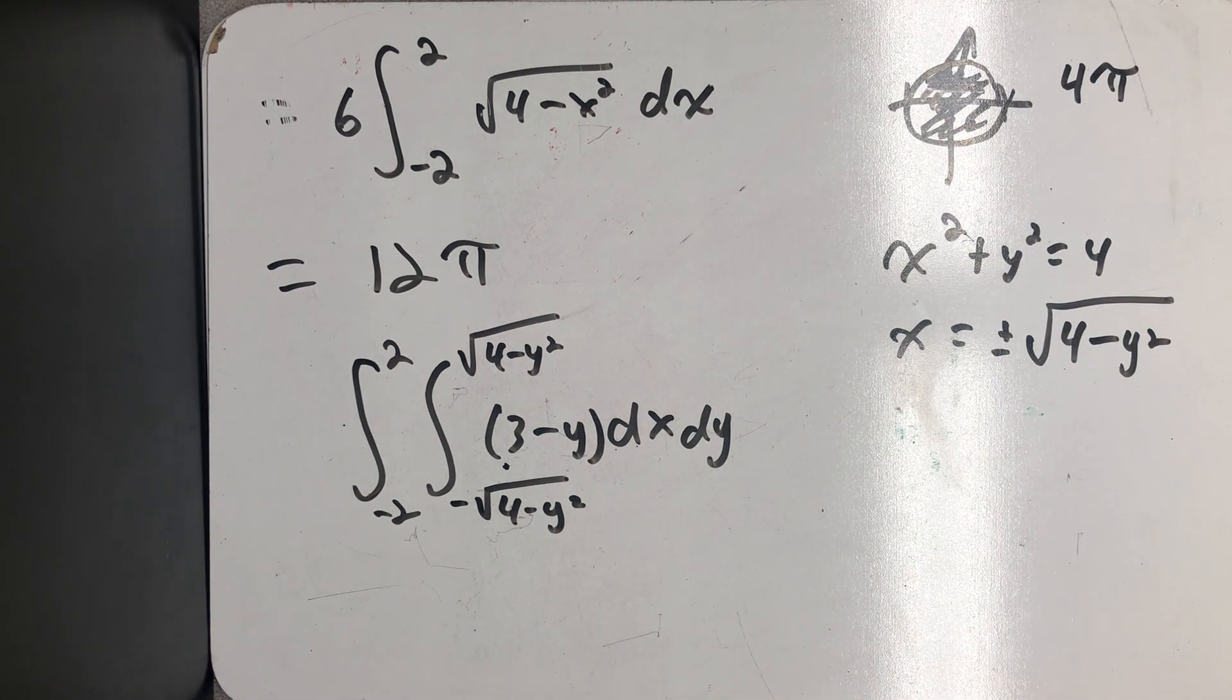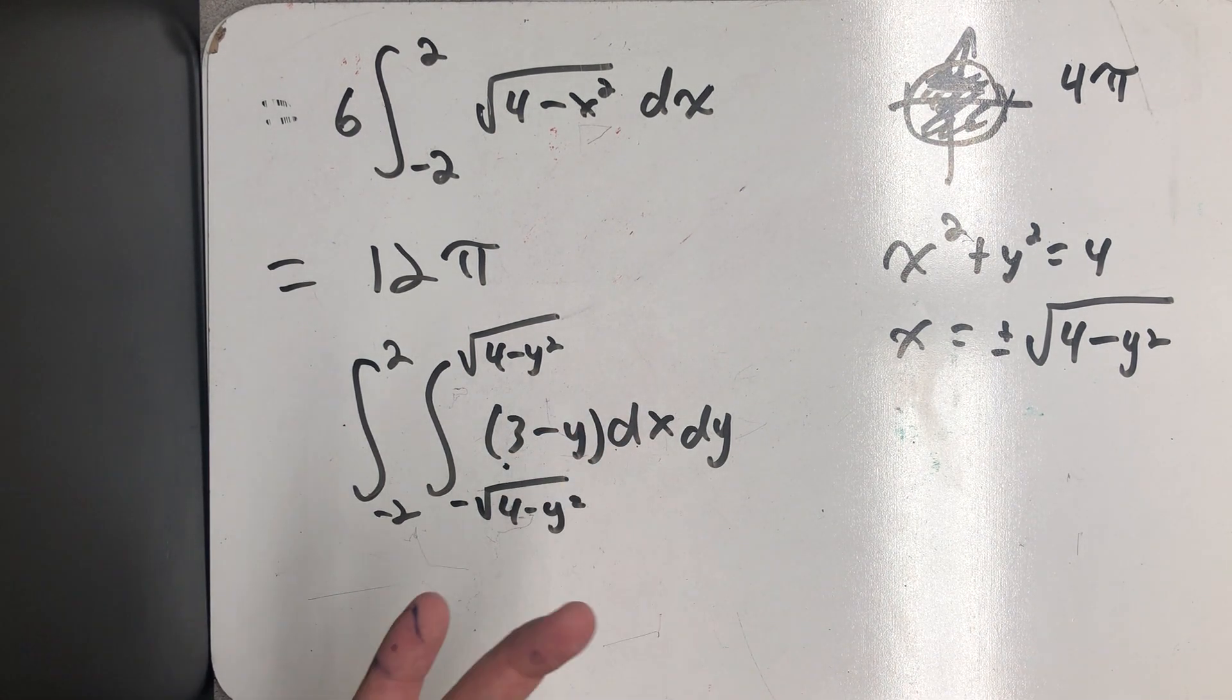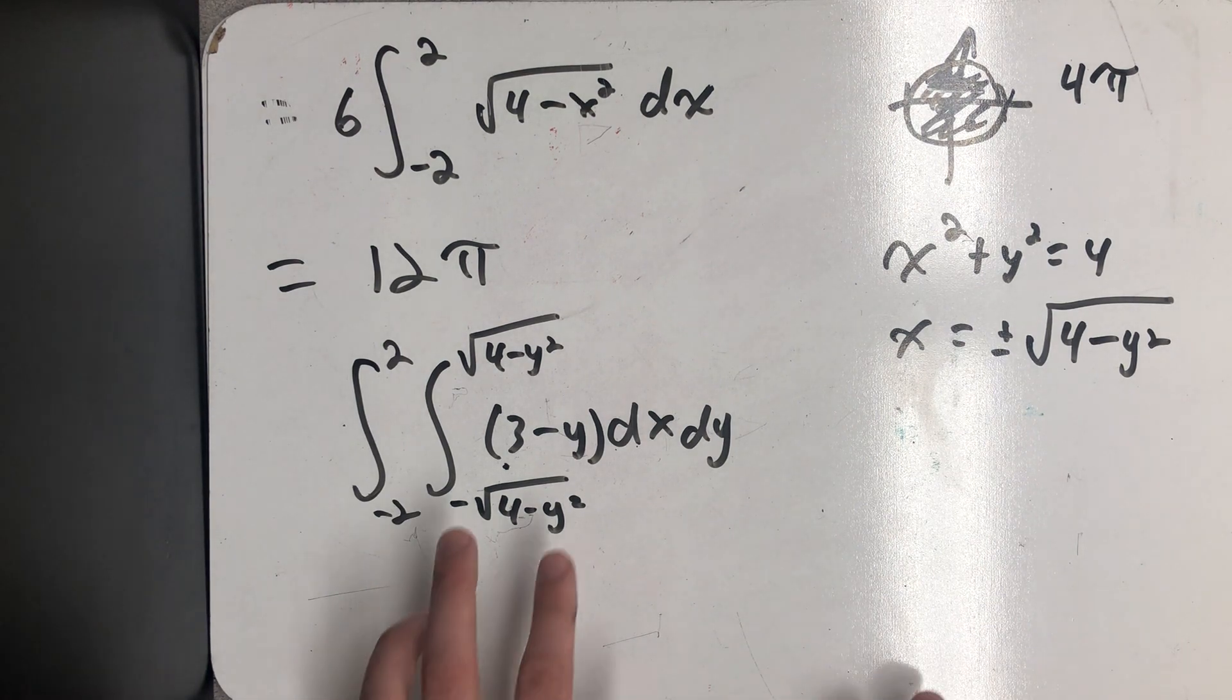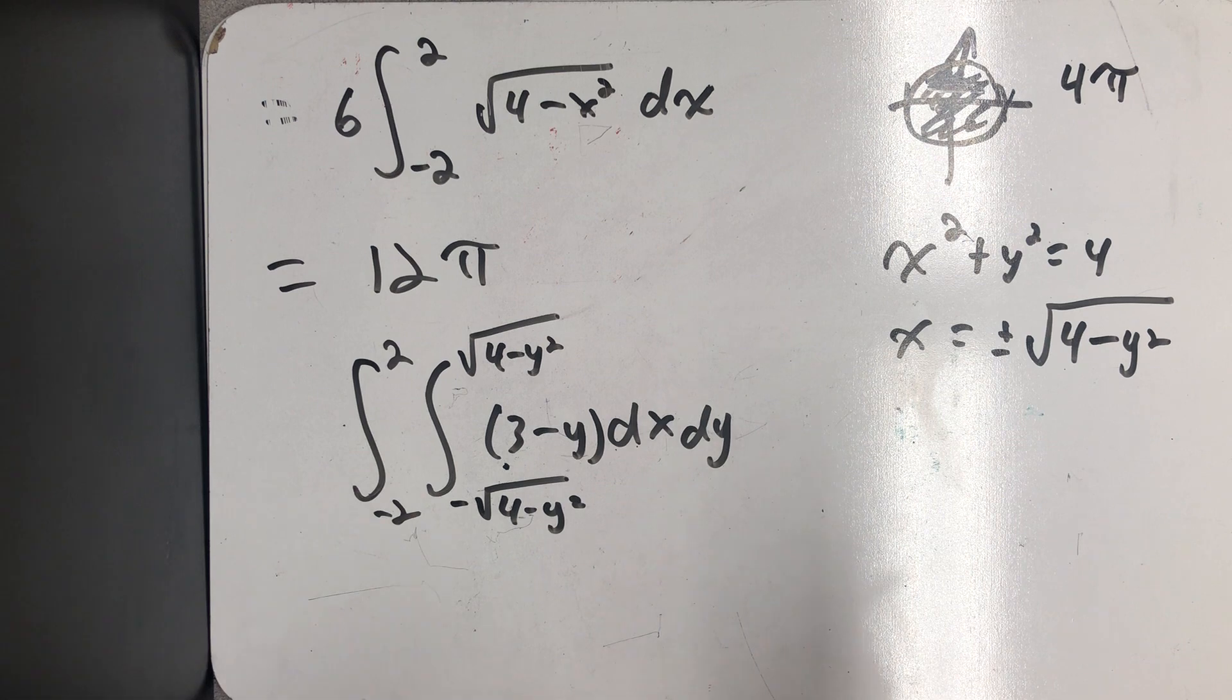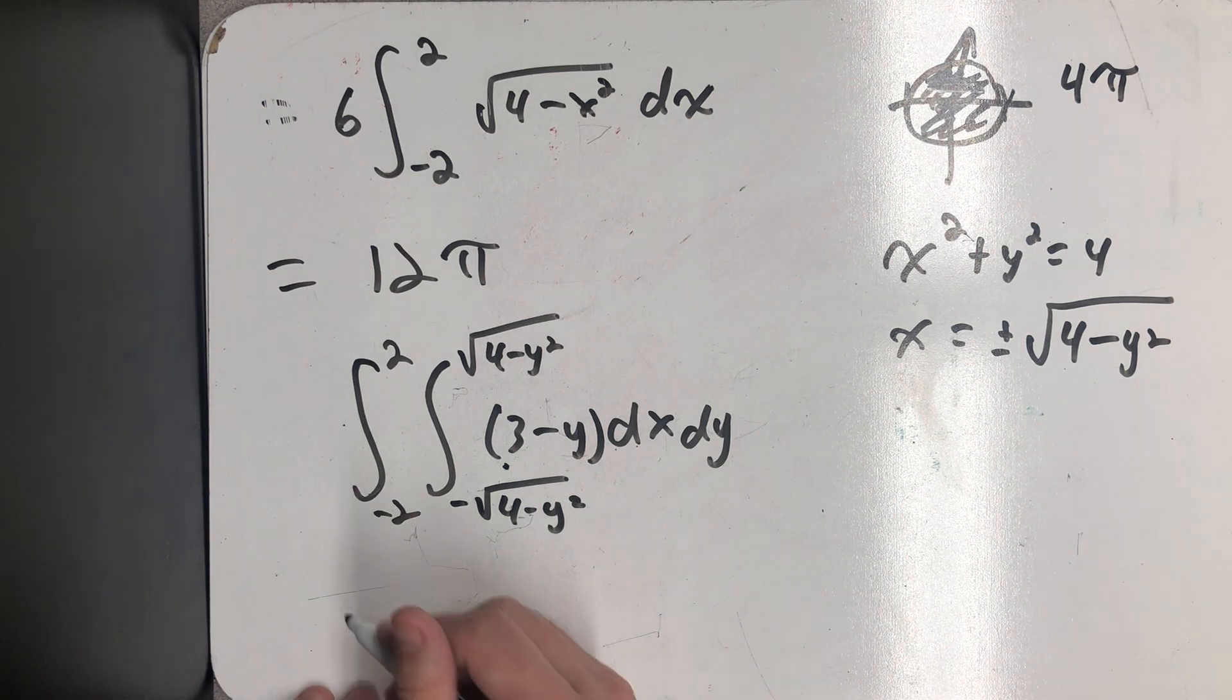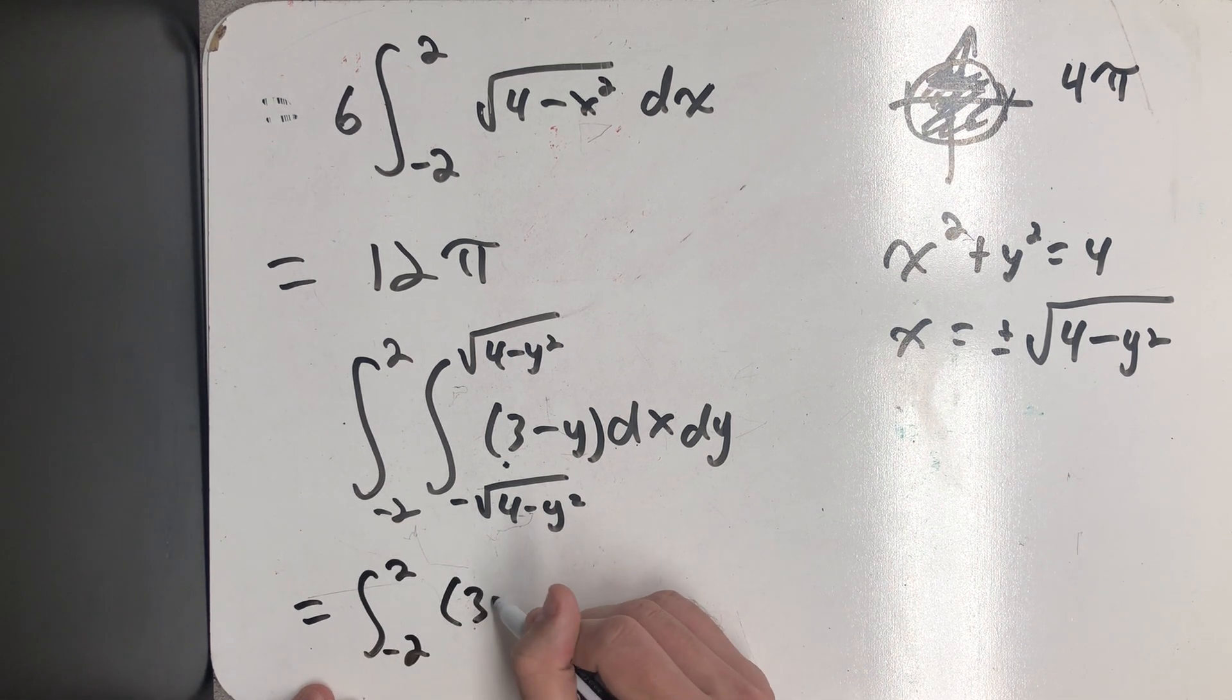All right, so it doesn't look too shockingly different, but I realize now that when I go to integrate this with respect to x, 3 minus y is a constant. In fact, I could imagine writing that in front of the first integral and writing it between the two iterated integrals because, well, it's a constant.